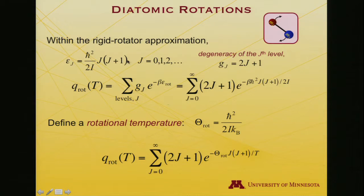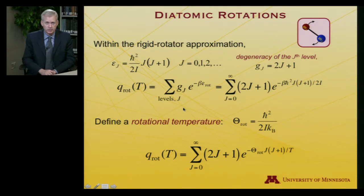If we construct a partition function over levels, including the degeneracy explicitly in the summation, we would write it as the sum from j equals 0 to infinity, 2j plus 1, e to the minus beta times the energy expression. It's more convenient, from a manipulation standpoint and for conceptual purposes, to define a rotational temperature, much as we defined a vibrational temperature when working with the vibrational partition function.